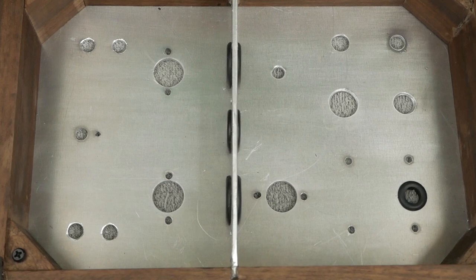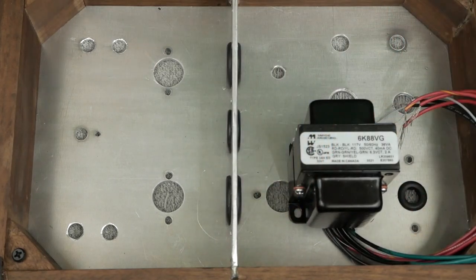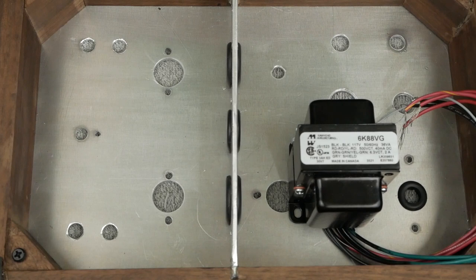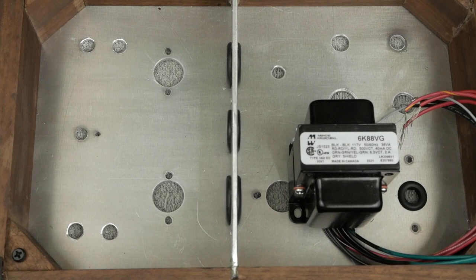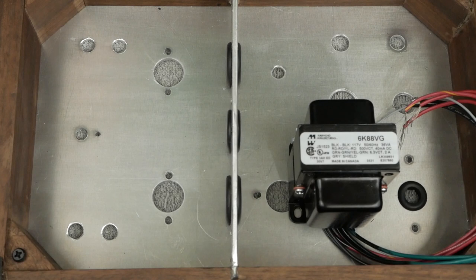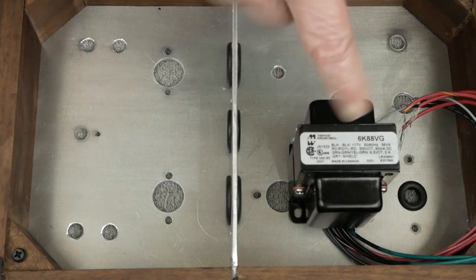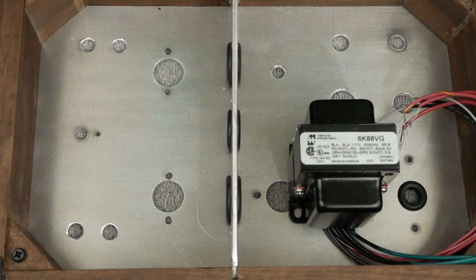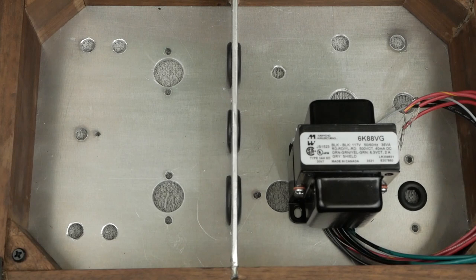We're gonna start this build with the power supply like I always do. First, this is using the Hammond 6k88vg transformer. I don't know if Hammond's still making this model. I went on their website and nothing shows up in a search. Mouser doesn't have any of these. But when I did an internet search, I found the same part number and specs with Allied Electronics. There's several people that still seem to have some of these in stock. I saw prices ranging from $61 up to $125.